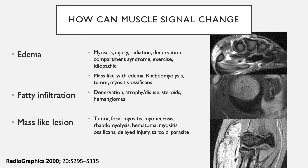Let's look at how muscle signal can change. Edema is diffuse T2 signal hyperintensity, best demonstrated on fluid-sensitive fat suppressed images, and can result from myositis, injury, radiation, denervation, compartment syndrome, exercise, or other idiopathic lesions. You can also have a mass-like abnormality with edema from rhabdomyolysis, tumors, and myositis ossificans.